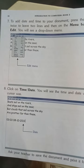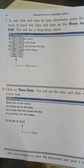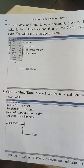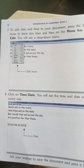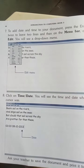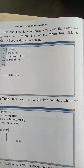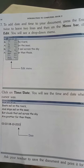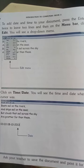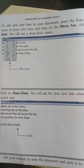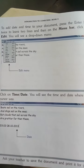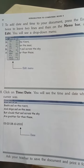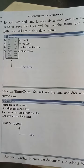To add date and time to your document, press the Enter key twice to leave two lines. Then on the menu bar, click on Edit — you will see a drop-down menu.